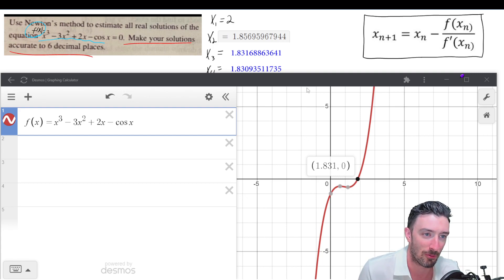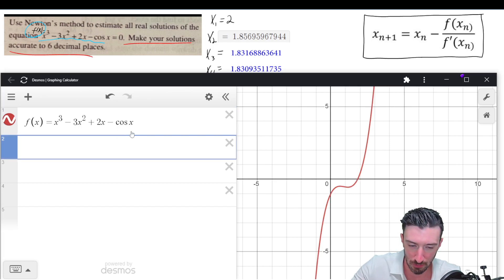I could start off with two. Obviously, I could start off with 1.831. But let's just go with two to make our lives a little simpler in terms of understanding what we've been doing.